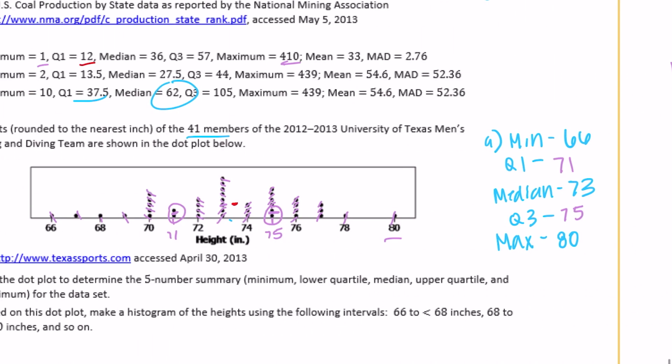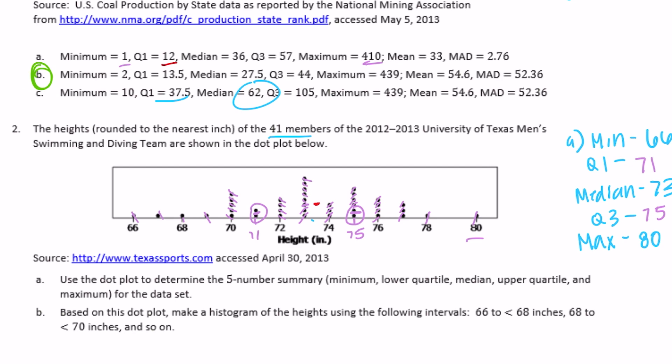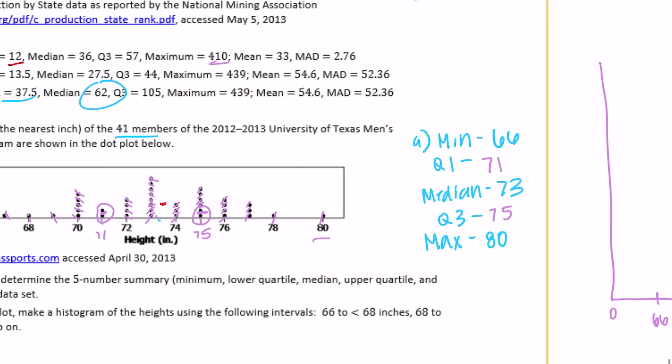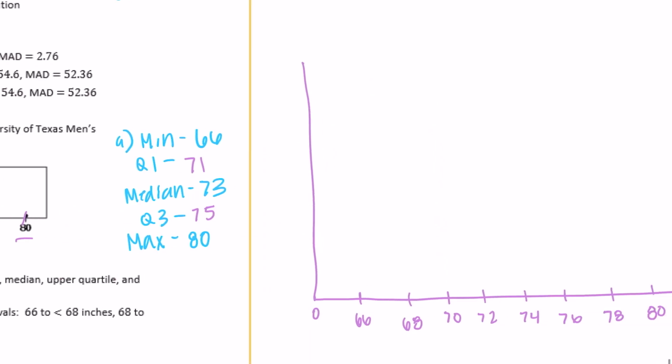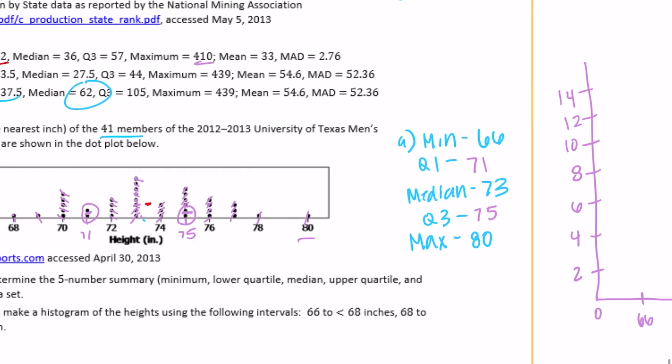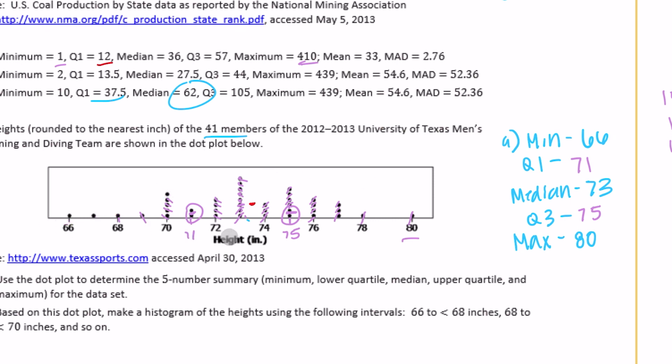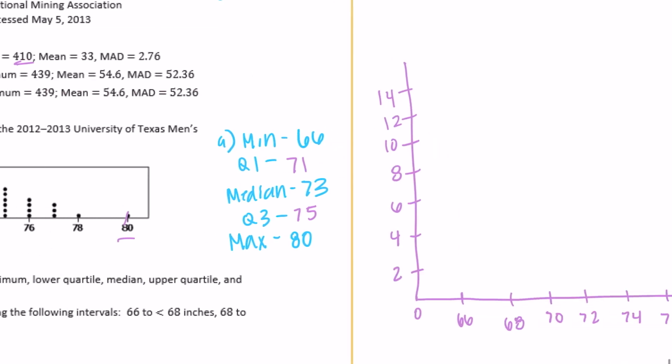And then the frequency of how often it occurs. Each dot only represents one data point. Looks like we range from anywhere from 1 to the most is 1, 2, 3, 4, 5, 6, 7, 8. But we go in 2s, so let's go maybe like up to 12 or 14. So I'm going to go by 2s: 2, 4, 6, 8, 10, 12, 14. Between 0 and 66 we don't have any, we have 0. From 66 to 68, but less than 68, we have 2.